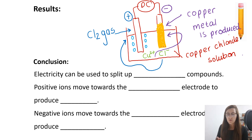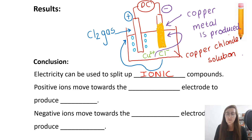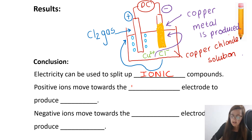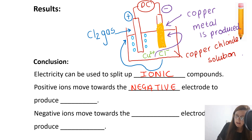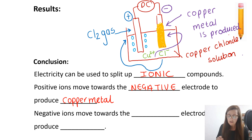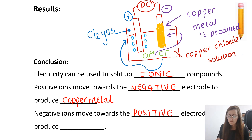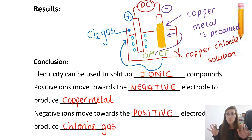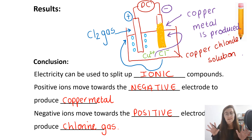So as our conclusion: electricity can be used to split up ionic compounds. They have to be ionic because they must contain ions which are able to move around in solution. Positive ions move towards the negative electrode to produce copper metal, and negative ions move towards the positive electrode to produce chlorine gas. At each electrode we have the elements which make up the ionic compound — we have taken our ionic compound and split it into those two elements using electricity.